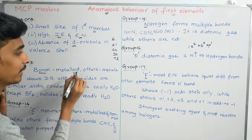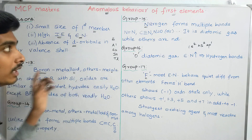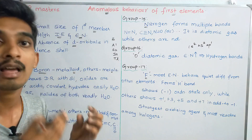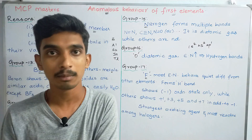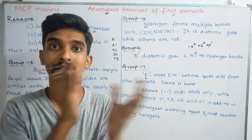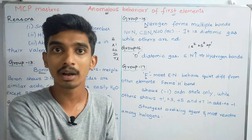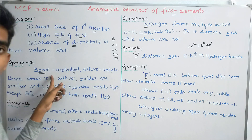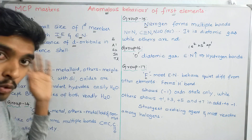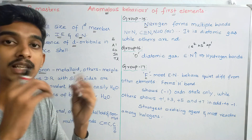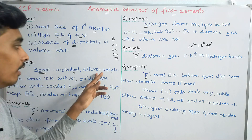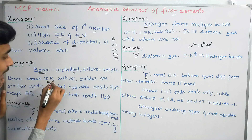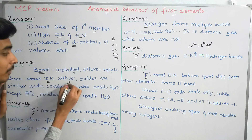Boron is a metalloid while others in Group 13 are metals. A metalloid is intermediate between a metal and a non-metal. So Boron is the first element of the group but it is a metalloid, whereas the rest are metals. Boron also shows a diagonal relationship with Silicon.